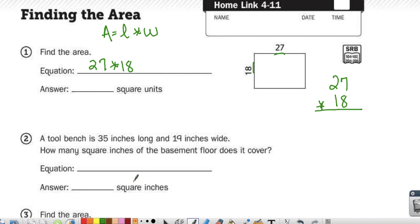To do 27 times 18, I'm going to do the traditional method for this. So 8 times 7 is 56, carry my 5. 8 times 2 is 16, 16 plus 5 is 21.